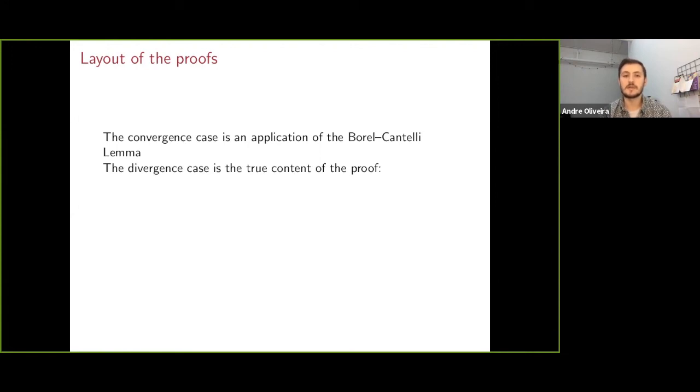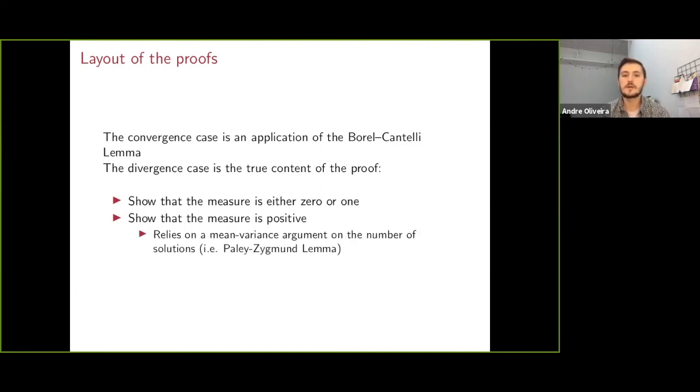The real heart of the argument is inside the divergence case. Here, we have to first show that the measure is either 0 or 1, and then, using the divergence assumption, show that this measure is actually going to be positive. This is going to require some mean-variance argument on the number of solutions that basically relies on a Paley-Zygmund lemma.